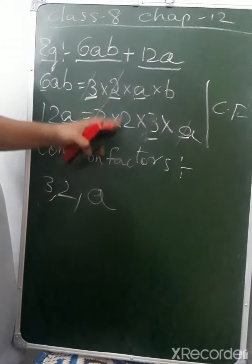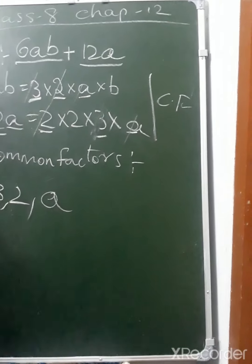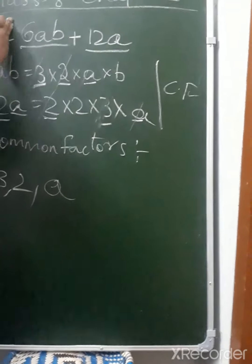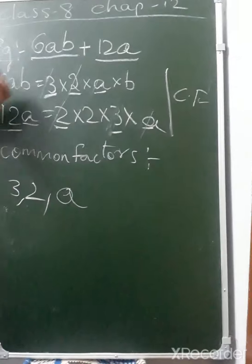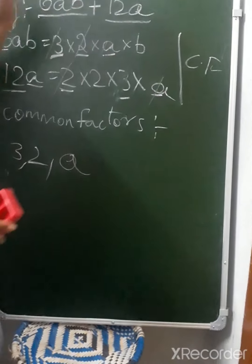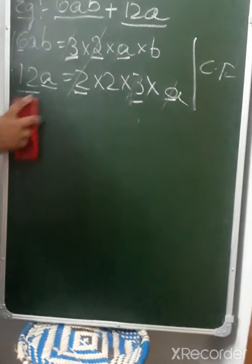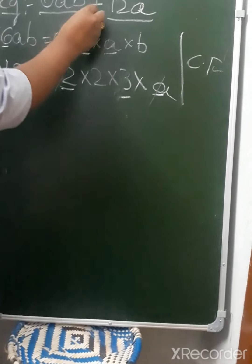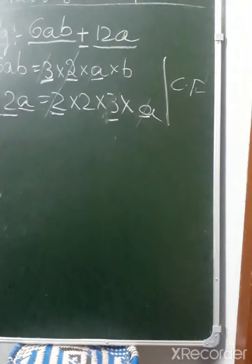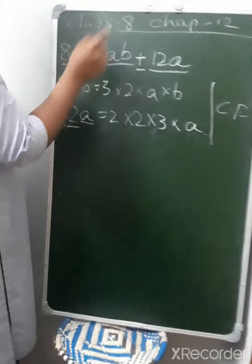The remaining terms after taking out common factors: from the first term, b is left; and from the second term, 2 is left. The problem is to factorize 6ab plus 12a. There is a plus symbol between the two terms, so we are going to add these. Let's substitute these two values in this example.